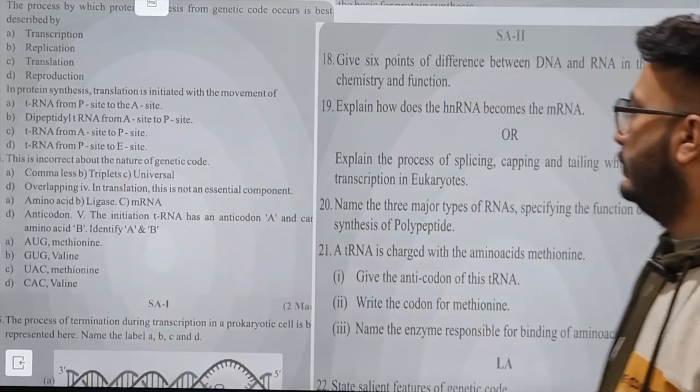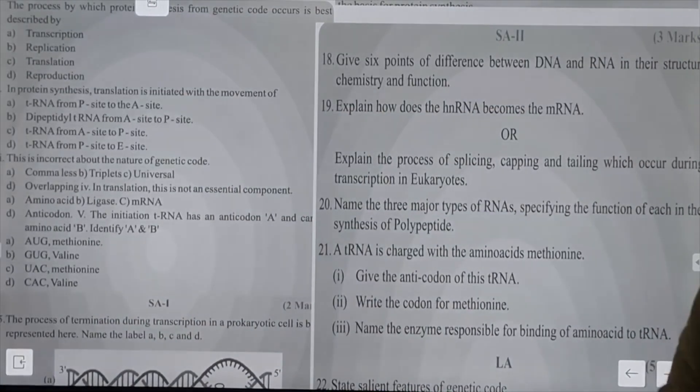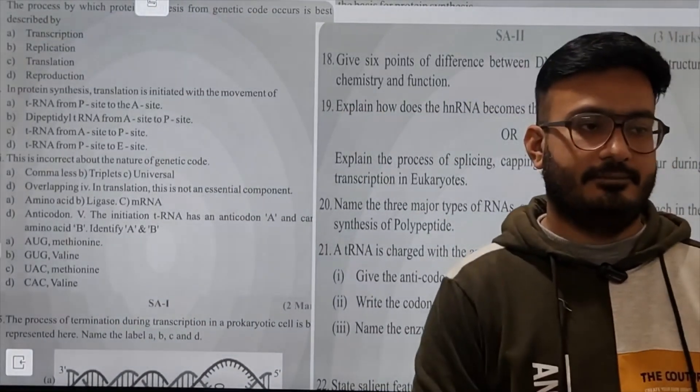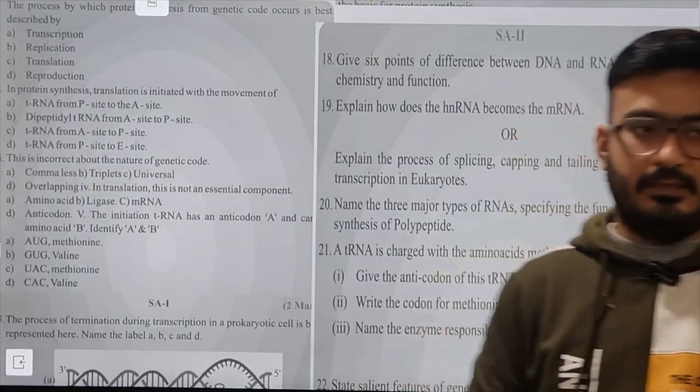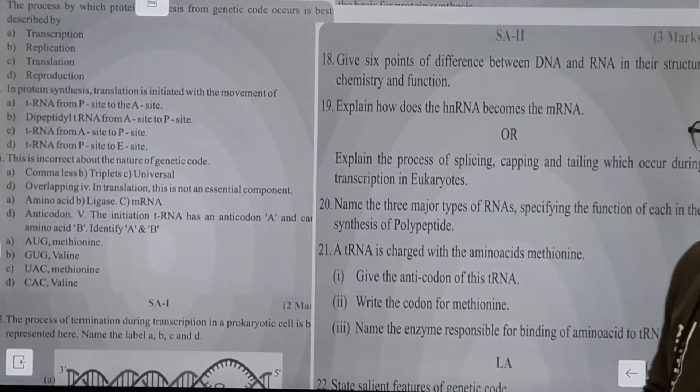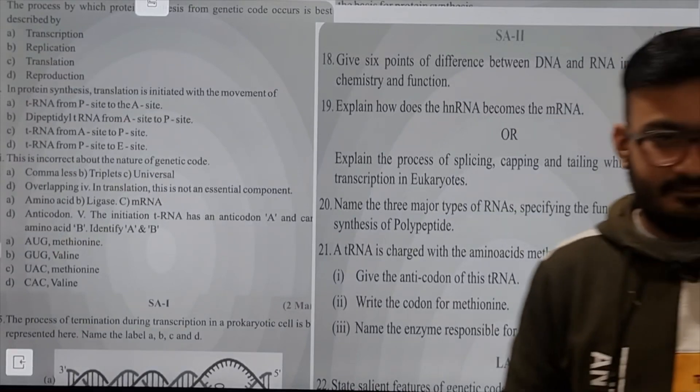So there are six points, and each point gets half a mark. You can write these six points. Moving on to the next question - number three, one and a half marks.